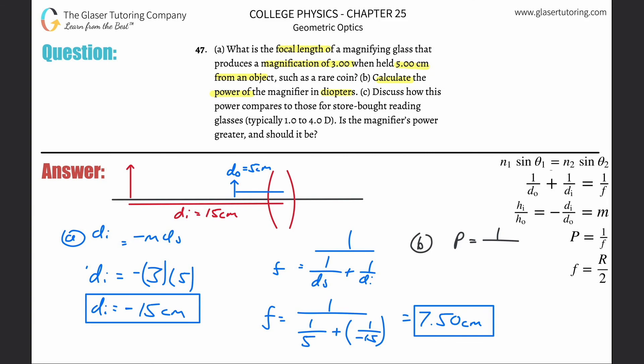Power equals one divided by the focal length, but the focal length has to be in meters. Because diopters is basically a capital D, and that equals one over meter. If you plug this in without converting, it's wrong, so you got to be careful about this.